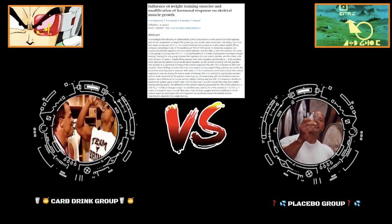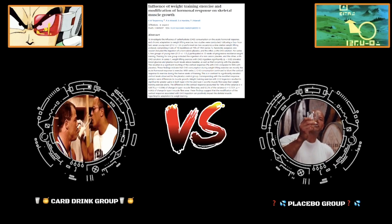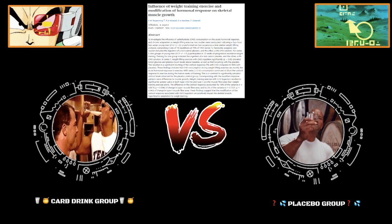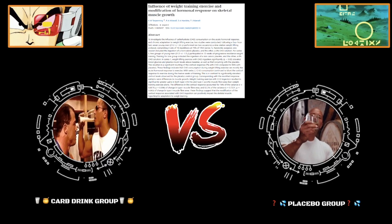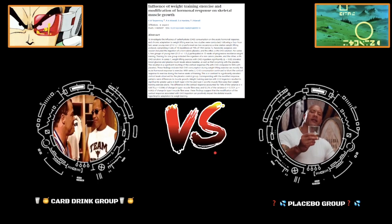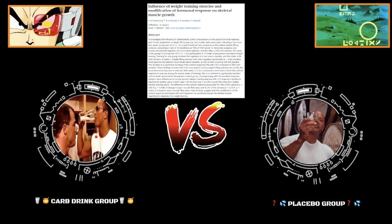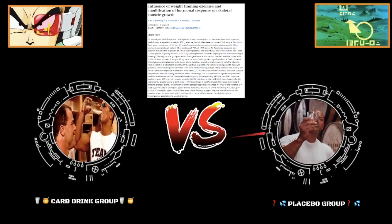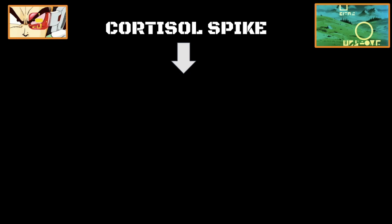But if you're training fasted or if you don't have enough glucose in your system, or if you're training for long periods of time, let's say you're training high volume, high intensity, more than 30 minutes, especially full body, and your body is cranking out cortisol like crazy. Well, this is a good study to show you exactly what happens long run.